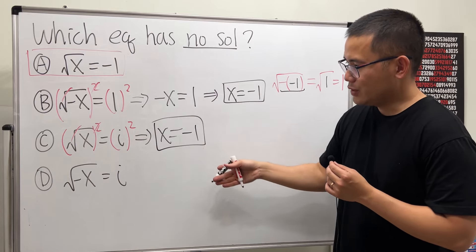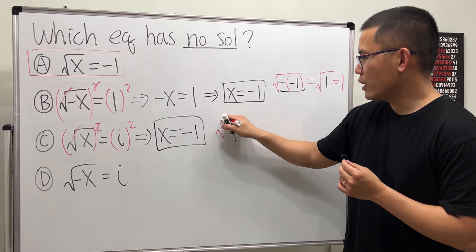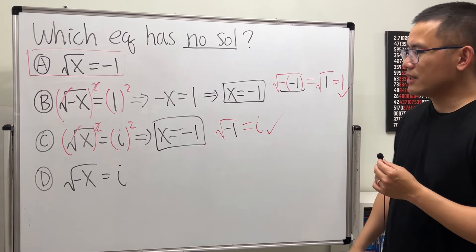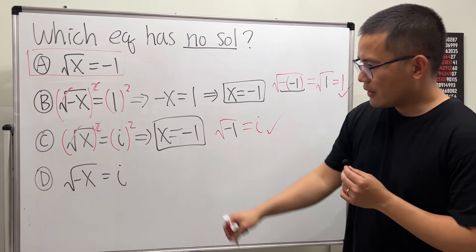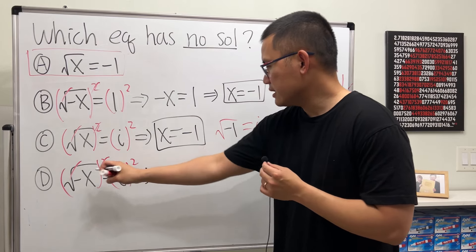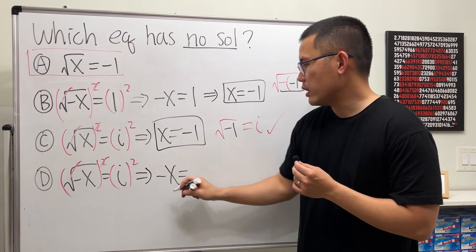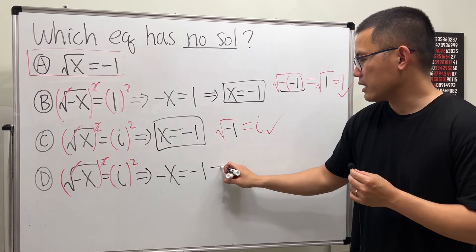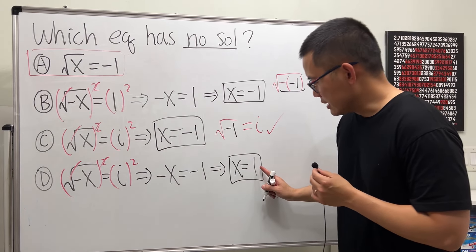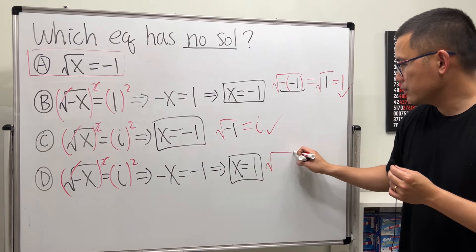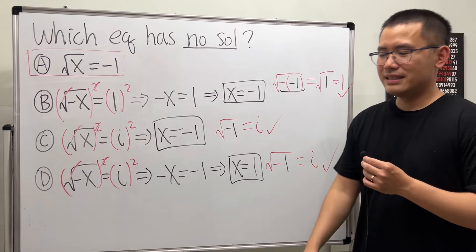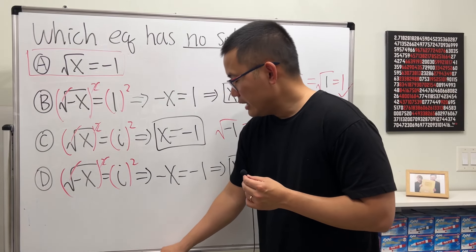Plugging that back in: square root of negative 1 — isn't that how we get i? Yes, just like earlier, it works. Finally for D, square both sides and we get negative x equals i squared, which is negative 1. Divide both sides by negative, and x equals 1. This also works, because plugging 1 in gives square root of negative 1, which equals i.